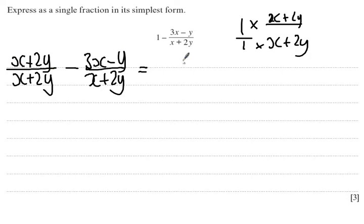Simplifying, I get x plus 3x is 4x. 2y, sorry, apologies, it's x minus 3x, which of course should give us minus 2x. I then get 2y minus minus y, so plus 3y. And this is all over x plus 2y.